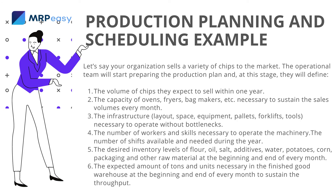Let's say your organization sells a variety of chips to the market. The operational team will start preparing the production plan and, at this stage, they will define: 1. The volume of chips they expect to sell within one year. 2. The capacity of ovens, fryers, bag makers, etc., necessary to sustain the sales volumes every month. 3. The infrastructure, layout, space, equipment, pallets, forklifts, and tools necessary to operate without bottlenecks. 4. The number of workers and skills necessary to operate the machinery. 5. The number of shifts available and needed during the year.